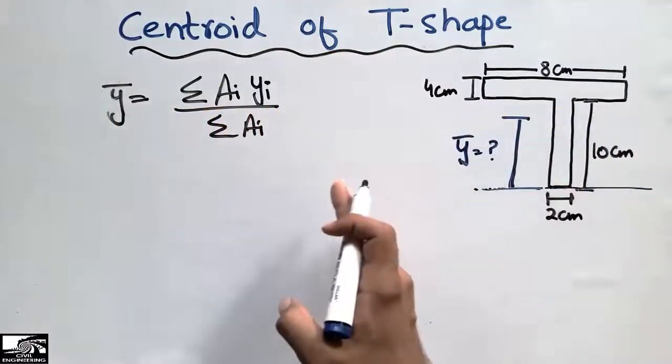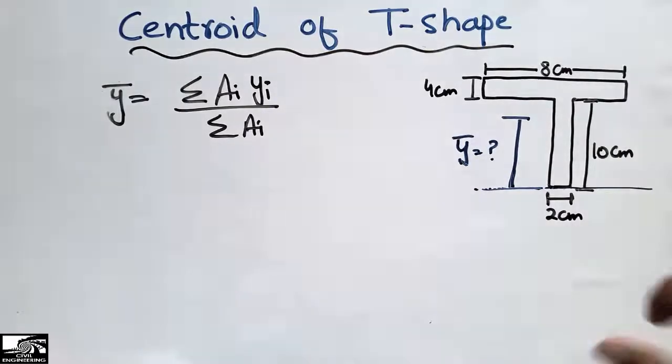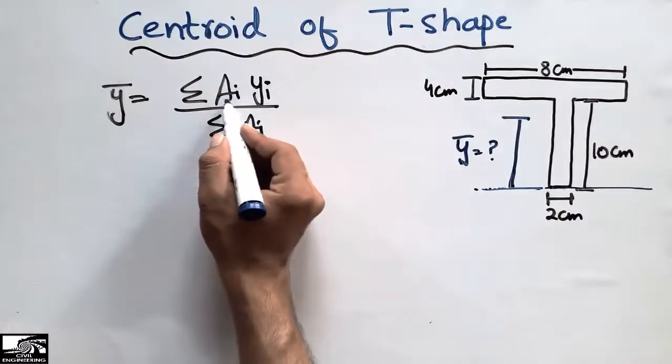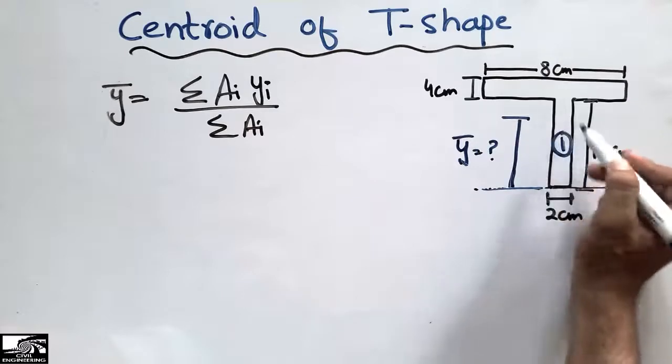You can also find the centroid in the horizontal direction, the X bar. First I will find the individual areas of the two objects. Here is one object and here is the second object.